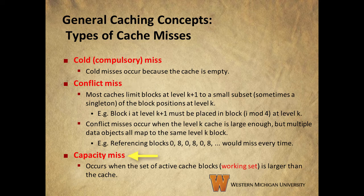Finally, a capacity miss occurs when the set of active cache blocks is larger than the size of the cache. An example of this would be a loop that accesses the elements of the same array over and over again. The set of blocks containing the array is called the working set of that phase of the program. When the size of the working set is larger than the size of the cache, we get capacity misses because the cache is simply too small to contain the blocks in the working set.